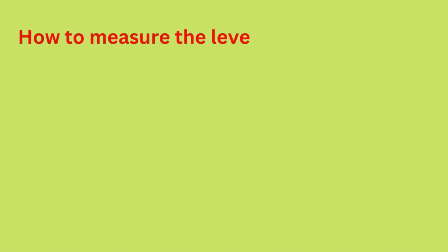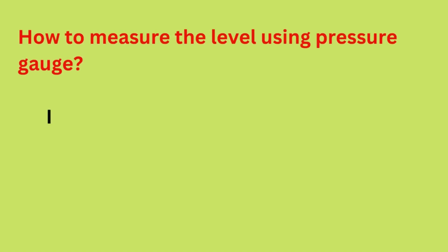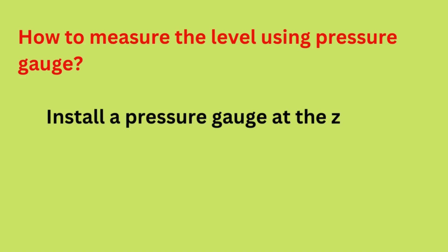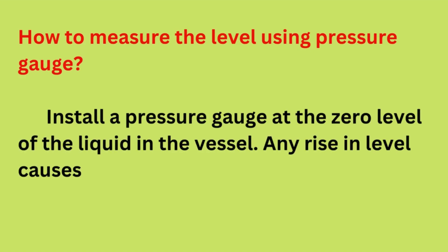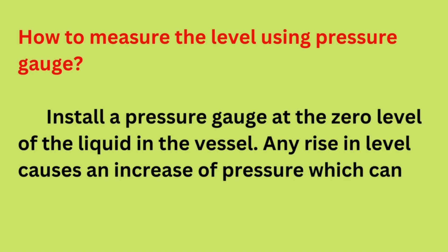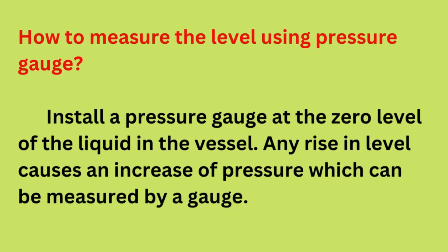How do you measure level using a pressure gauge? Install a pressure gauge at the zero level of the liquid in the vessel. Any rise in level causes an increase of pressure, which can be measured by the gauge.